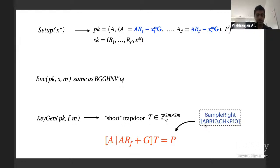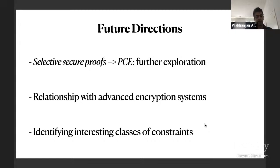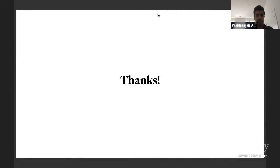The setup algorithm takes the point x* and outputs a fake secret key and public key. The key generation algorithm issues keys only if f is authorized. We instantiate this using the proof structure of the attribute-based encryption scheme by Boneh et al. There are many open questions, including whether different selective security proofs can be converted to pre-constrained encryption constructions, and understanding the relationship to ABE better.